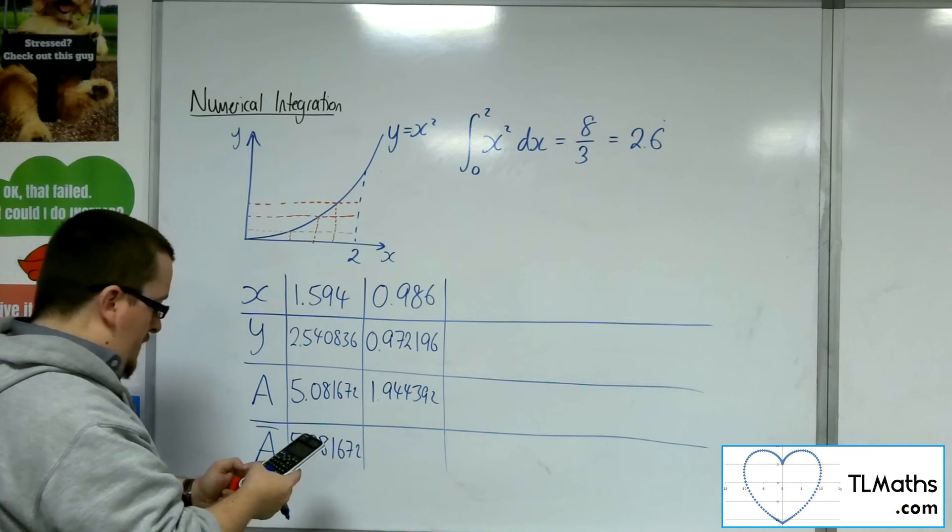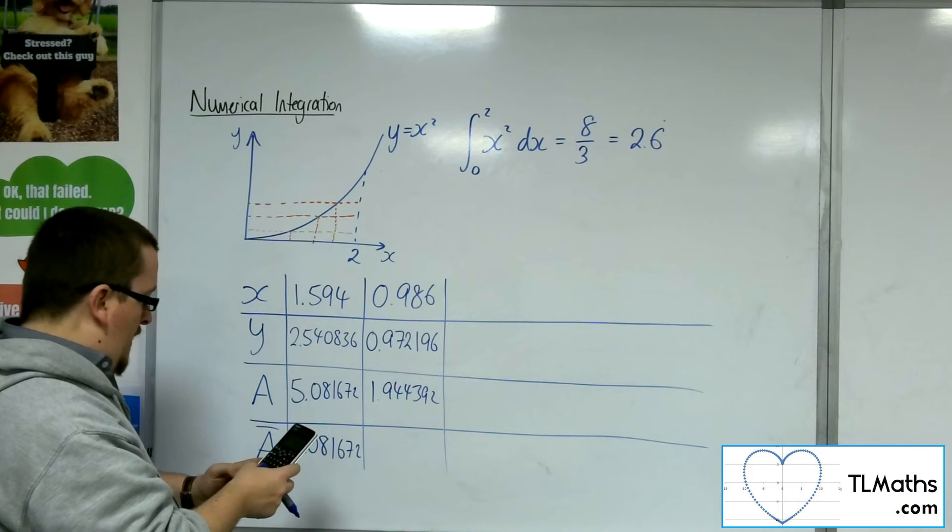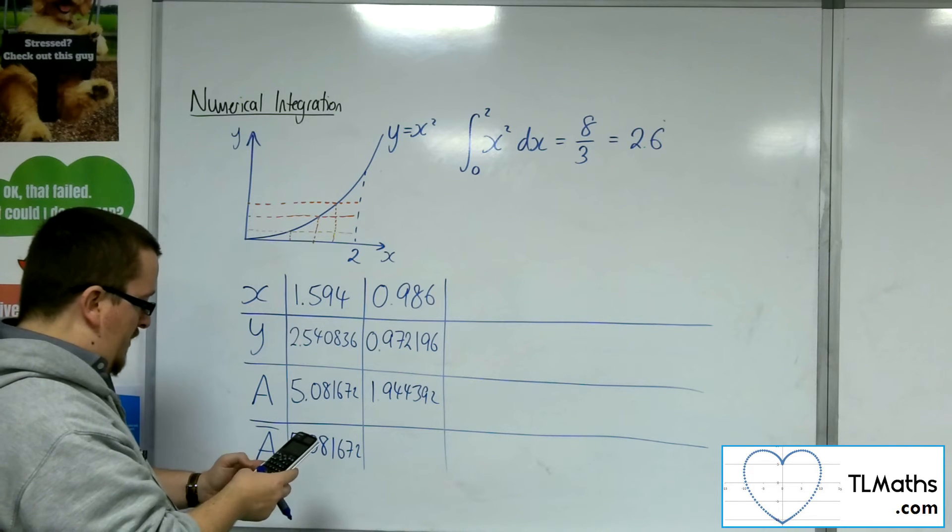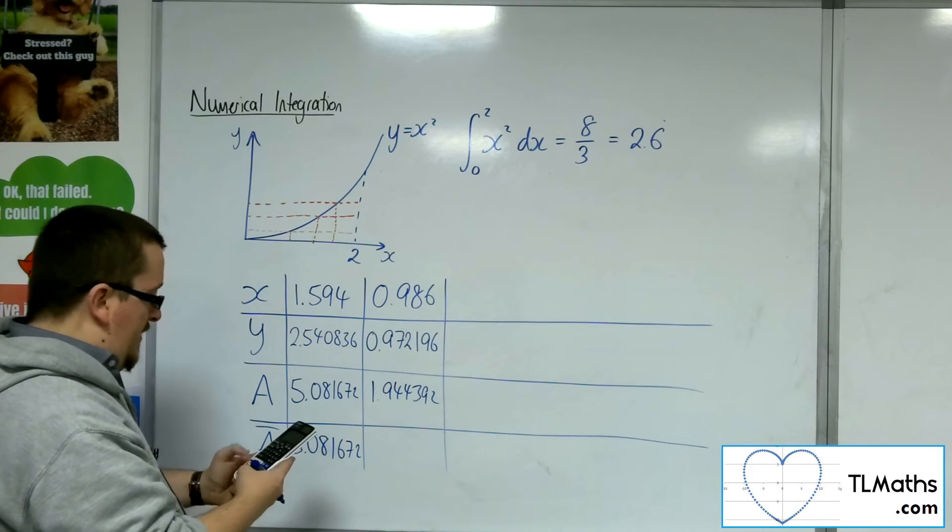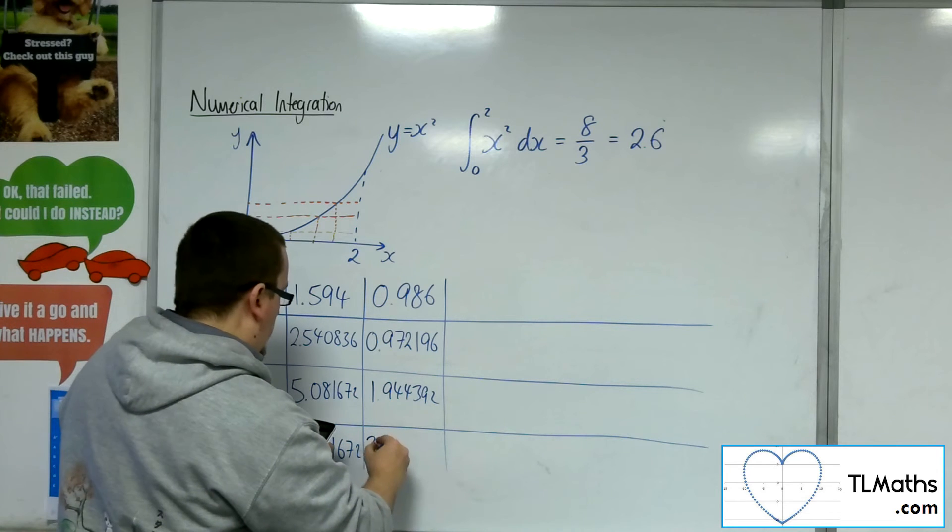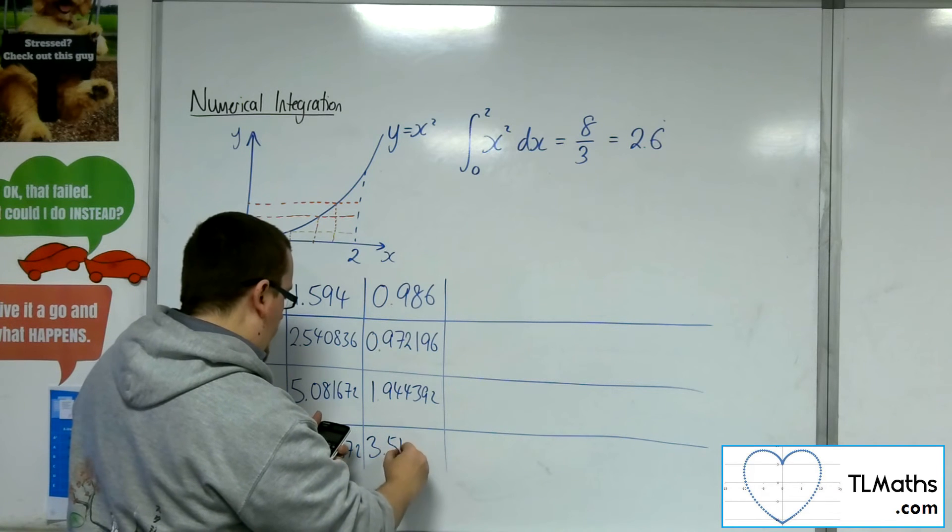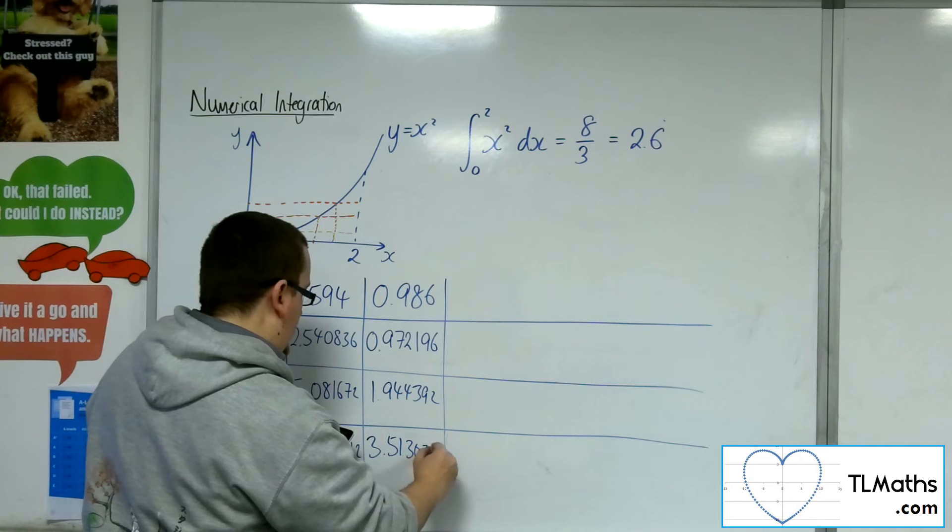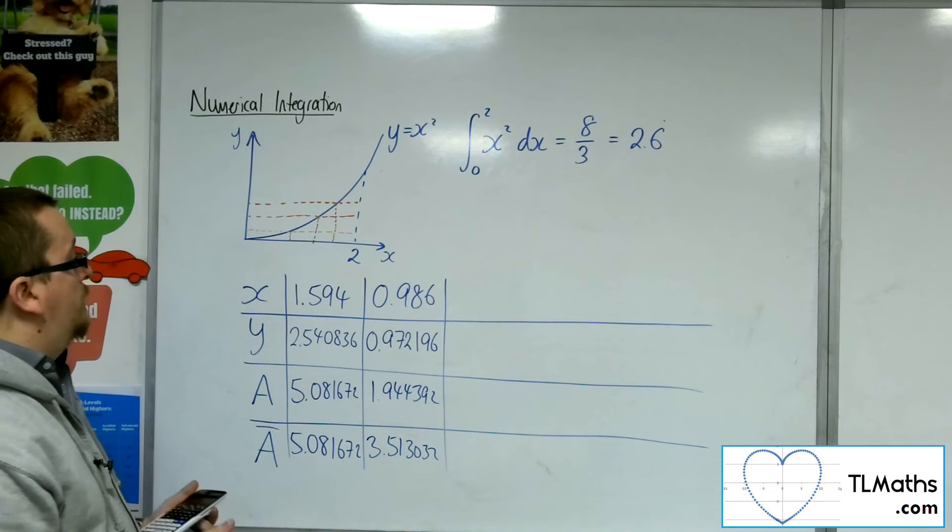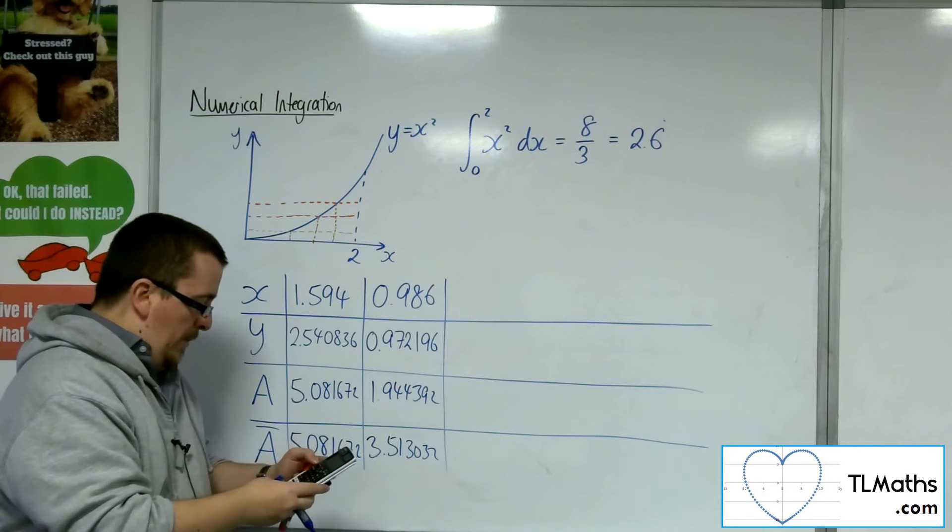So if I add on the 5.081672 from before and divide that by 2, my running average is 3.513032. So that's just from two rectangles.